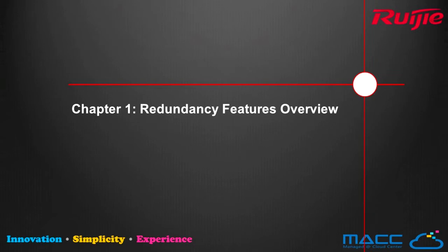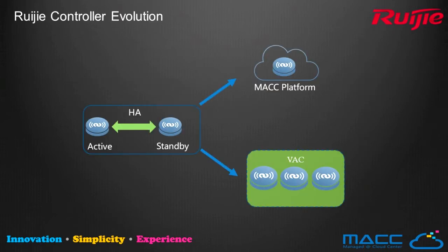Let's start with a brief overview of redundancy features in Yuejie. In the past, before virtualization came out, we used HA function for redundancy. In order to simplify the network design and increase capability, reliability, and usability, Yuejie Wireless evolves into two different branches: one is the MACC platform, which uses a software structure, and the other is what we are going to introduce — the Virtual Access Controller.